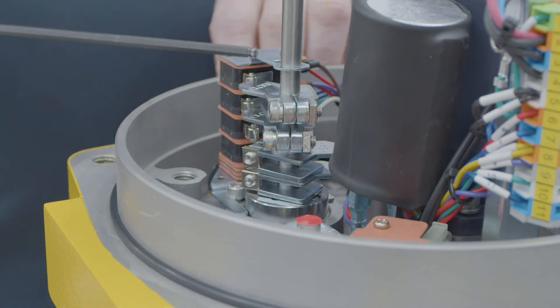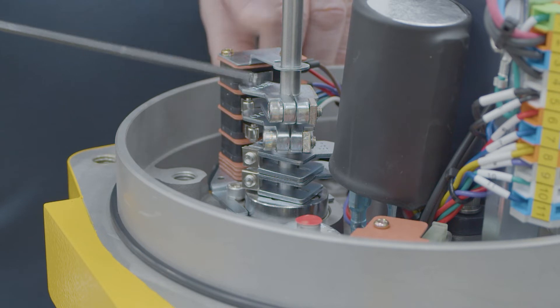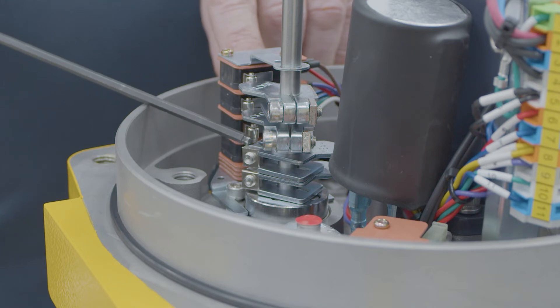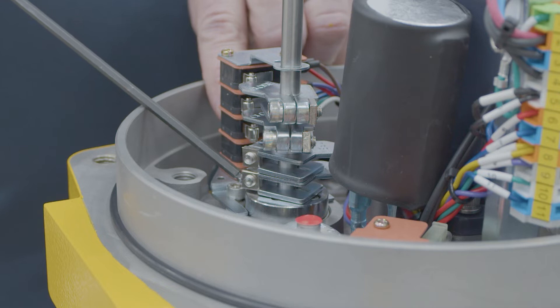So your top switch is your clockwise or your closed for your motor stop. Your second is your auxiliary for your closed. Your third one down is going to be your open or counterclockwise for your motor stop. And then the fourth one is going to be your auxiliary for your open.